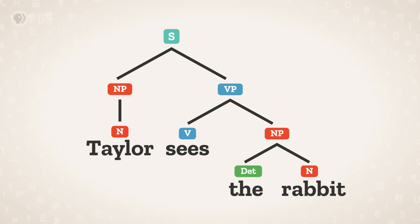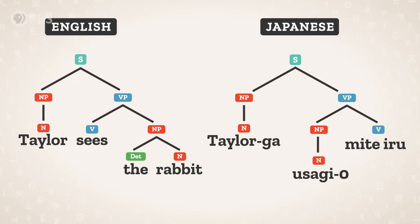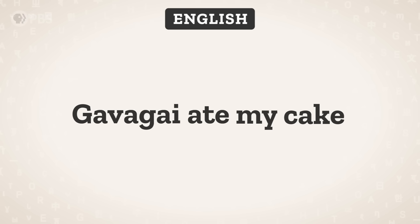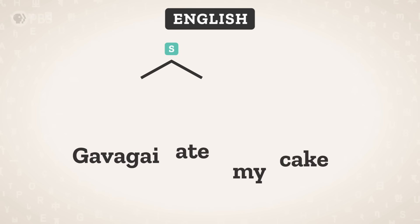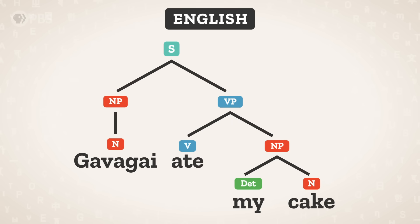Tree diagrams let us see the predicate relationship we talked about in the last episode. The verb and object noun phrase are both together within the VP. Even in languages that put their words in a different order, the verb and the object still have this closer relationship. In Japanese, the verb comes at the end of the sentence, but the verb is still in the same phrase — the verb phrase — as the object, so we can represent this in the tree structure diagram by just giving the VP node a little twist. Going back to English, the sentence 'Gavagai ate my cake' has completely different words from the first one, but the exact same structure, so its tree structure diagram looks the same.